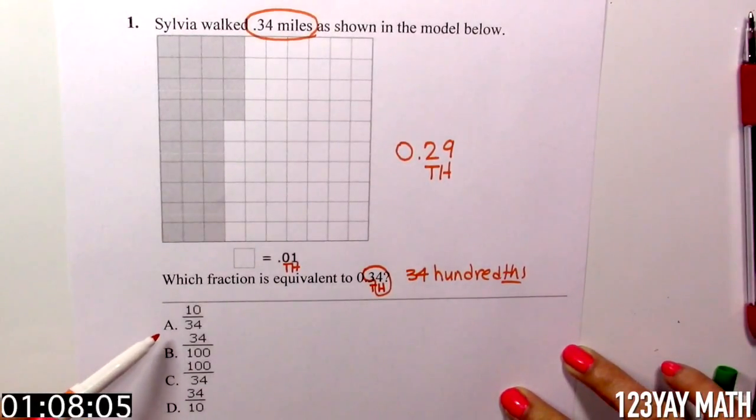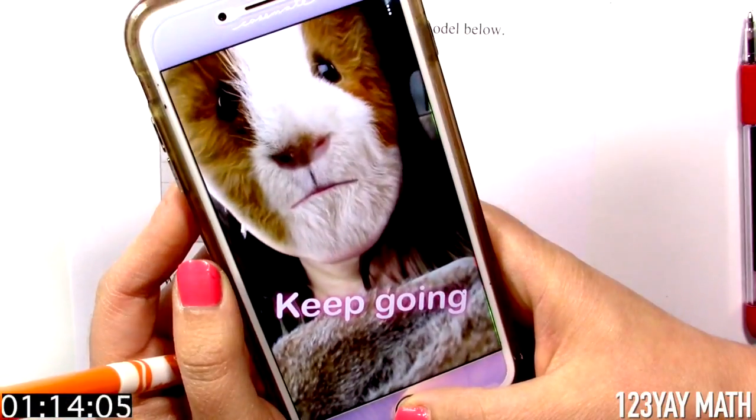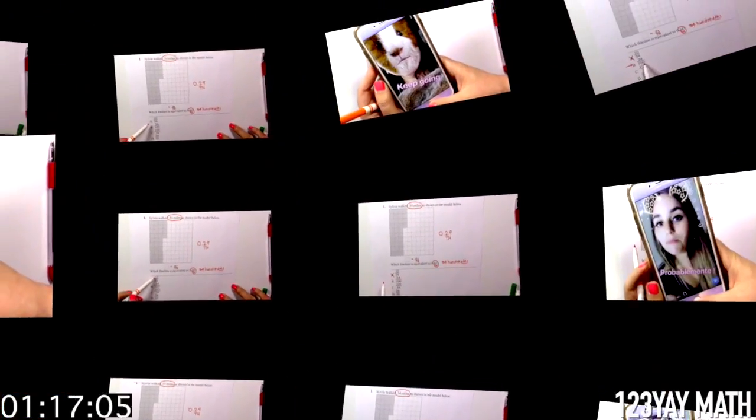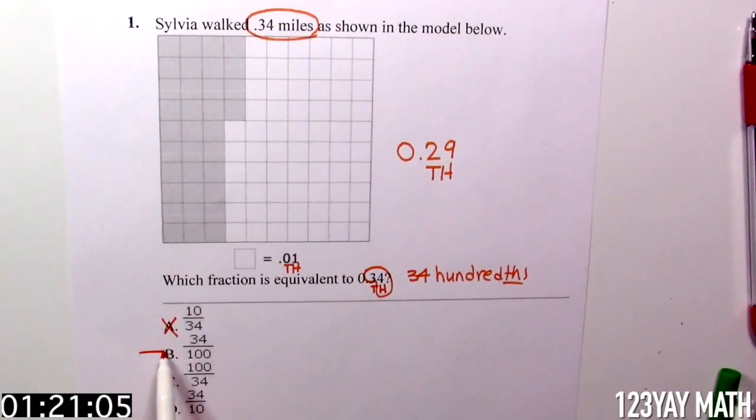Let's start with option A: 10/34. Are these 30 fourths? That's not it. Keep going. It's not A. What about B? 34/100, 34 hundredths.